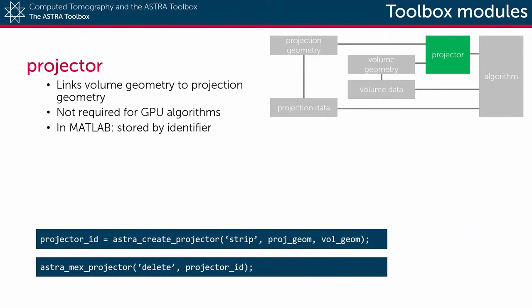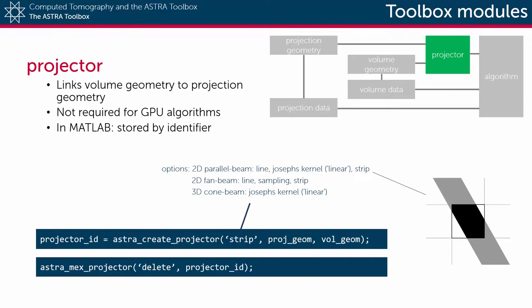To configure a projector, use the function astra_create_projector. As arguments, put the type of projector you wish to use and its corresponding projection and volume geometries. Depending on the type of projection geometry, multiple projector types are available.